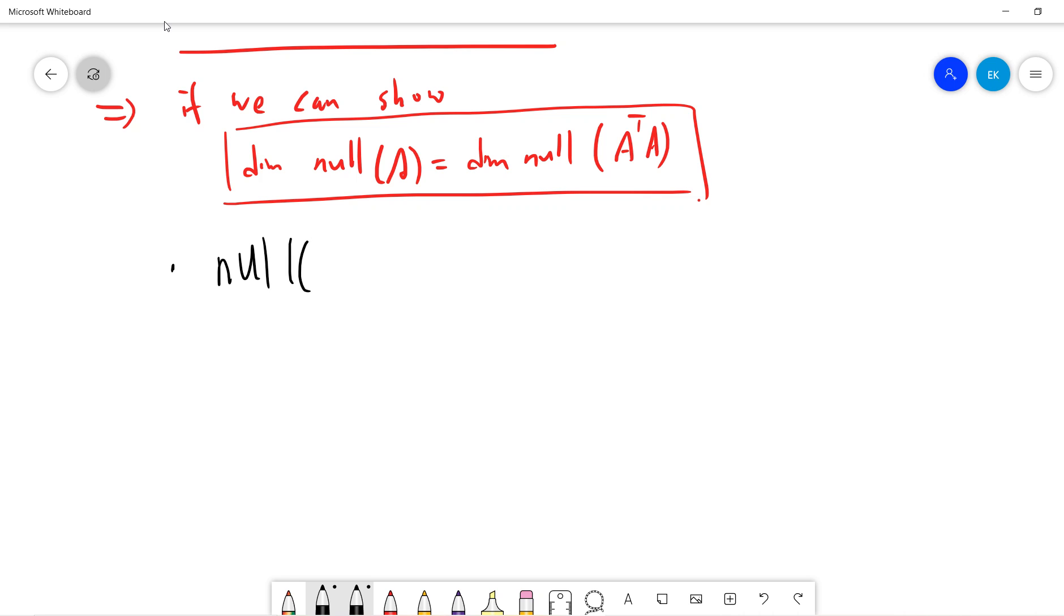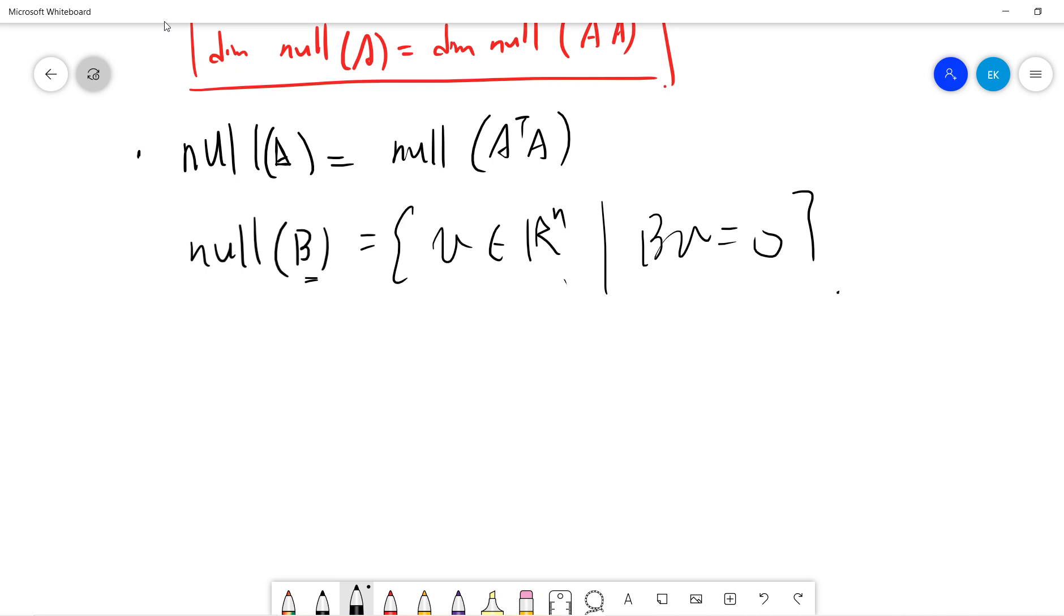I claim that null A is the same set as null A^T A. Let me recall that the null space for some linear transformation B is the set of vectors v in R^n such that Bv equals zero, which is a linear subspace.